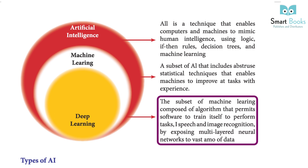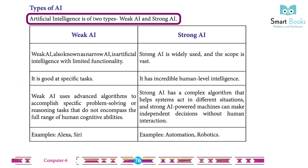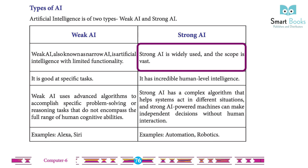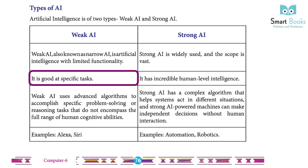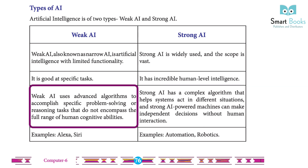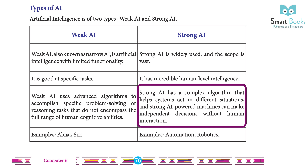Types of AI: Artificial intelligence is of two types — Weak AI and Strong AI. Weak AI, also known as Narrow AI, is artificially intelligent with limited functionality. It is good at specific tasks, and uses advanced algorithms to accomplish specific problem-solving or reasoning tasks that do not encompass the full range of human cognitive abilities. Strong AI is widely used and the scope is vast. It has incredible human-level intelligence, with a complex algorithm that helps systems act in different situations. A Strong AI-powered machine can make independent decisions without human interaction.